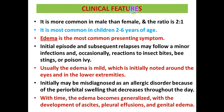Today I will talk about the clinical features. Nephrotic syndrome is more common in males than in females with a ratio of 2 to 1, and it is most common in children between the ages of 2 to 6 years. The initial episode and subsequent relapses may follow minor infections like upper respiratory tract infections or GIT infections, or reactions to insect bites, bee stings, or poison ivy.